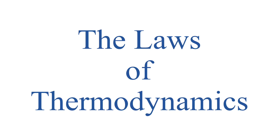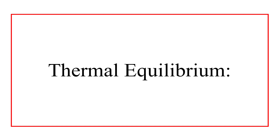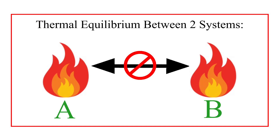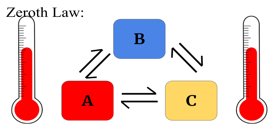The laws of thermodynamics. We start with the zeroth law to define temperature. It talks about thermal equilibrium where no heat is exchanged. If no heat is exchanged, then they must be the same temperature. Think transitive properties: if system A is in thermal equilibrium with system B, and system B is in thermal equilibrium with system C, then A must be in thermal equilibrium with C, and all of them are the same temperature.